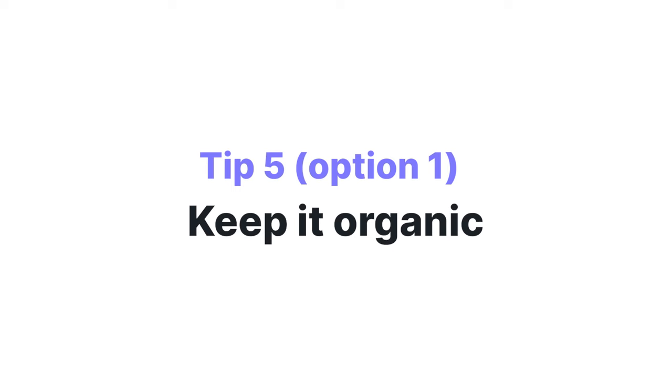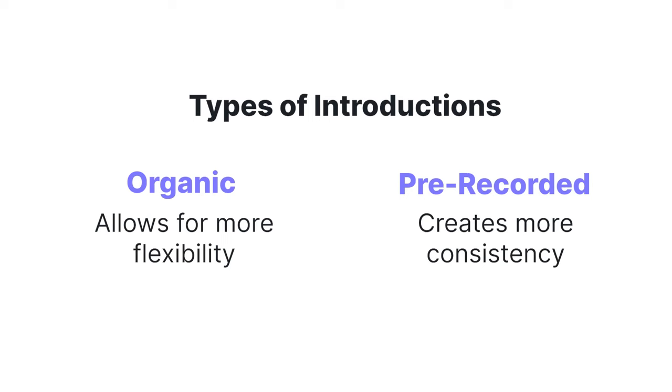Tip number five is to keep it organic. There are two types of ways to do introductions. You can read your intro organically for every episode, or you can have a pre-recorded intro that you insert into every episode. This is a great example of an intro that's read by the host every time. This gives you more flexibility with your call to actions if you have an upcoming event or you want to pitch an upcoming episode.